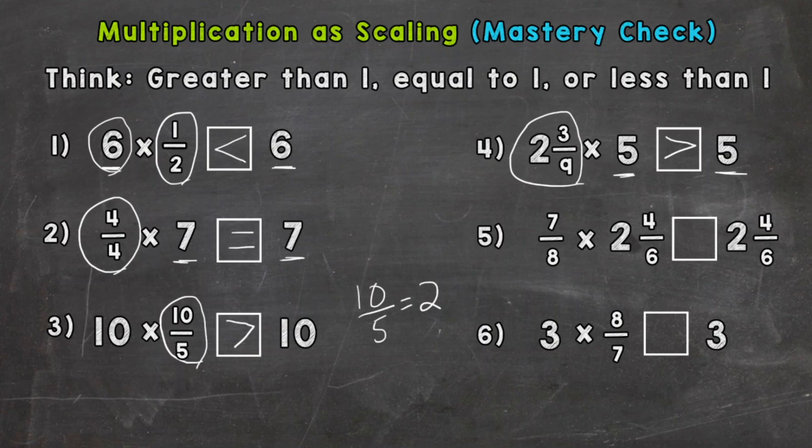And that brings us into number five. We have 2 and 4/6 on each side, and we're multiplying by 7/8, which is a little bit less than a whole, so it's actually going to drag our 2 and 4/6 down in value. So 7/8 times 2 and 4/6 is less than 2 and 4/6.